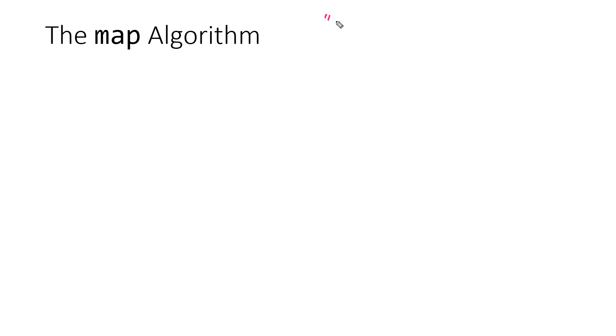Let's look at another algorithm named map — a higher order function — and apply some of these same concepts a bit differently. If you can imagine we have an input piece of data like a string, the word dog, and we have some function f. We apply that function to our input string. You can imagine function f transforms the string dog into the length of the string, such as three.